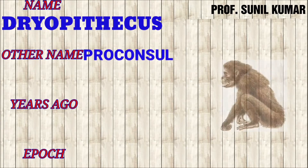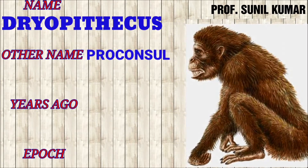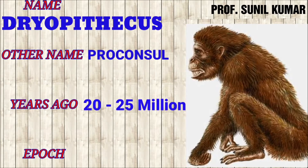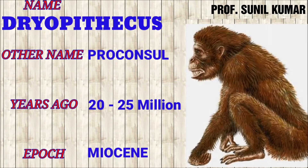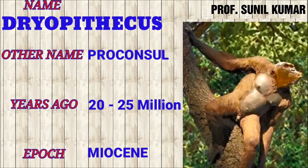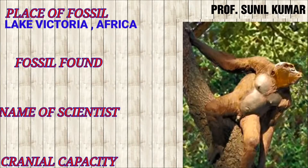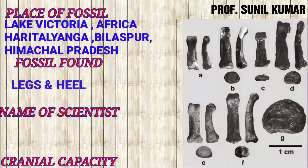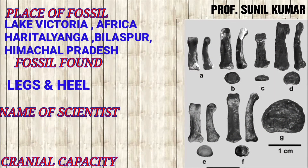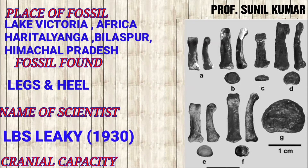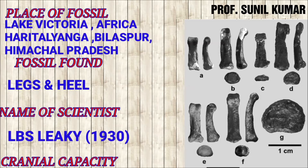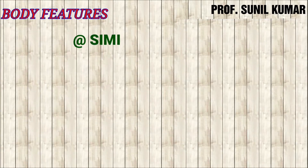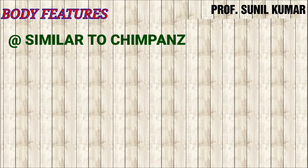The second stage of human evolution is Dryopithecus, also known as Proconsul. They evolved somewhere around 20 to 25 million years ago and lived in the Miocene epoch. They had an ape-like structure. The fossil was obtained in Lake Victoria, Africa, as well as in Haritalanga, Bilaspur, Himachal Pradesh. The fossils found were legs and heel, not the entire body, and Leakey in 1930 discovered the fossil.